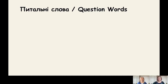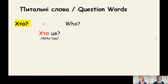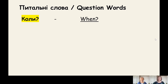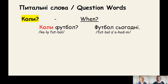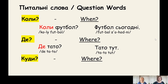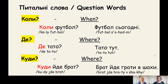Фантастично. Питальні слова — question words. Хто? Хто це? Це моя мама. Що? Що це? Це пальто. Коли? Коли футбол? Футбол сьогодні. Де? Де тато? Тато тут. Куди? Куди іде брат? Брат іде грати в шахи.